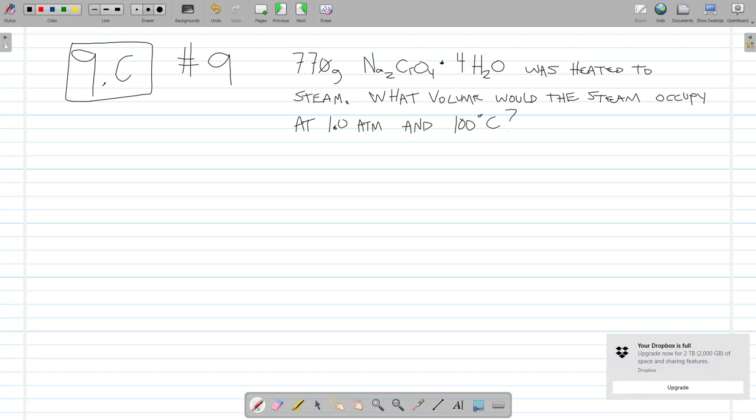Question 9. A 7.7 gram sample of sodium chromate tetrahydrate was heated such that the water was turned to steam and was driven off. Assuming ideal behavior, what volume would that steam occupy at 1 atmosphere and 100 degrees Celsius?